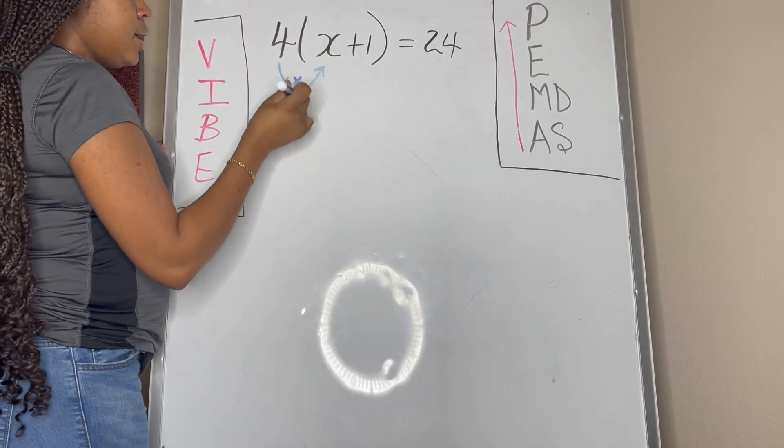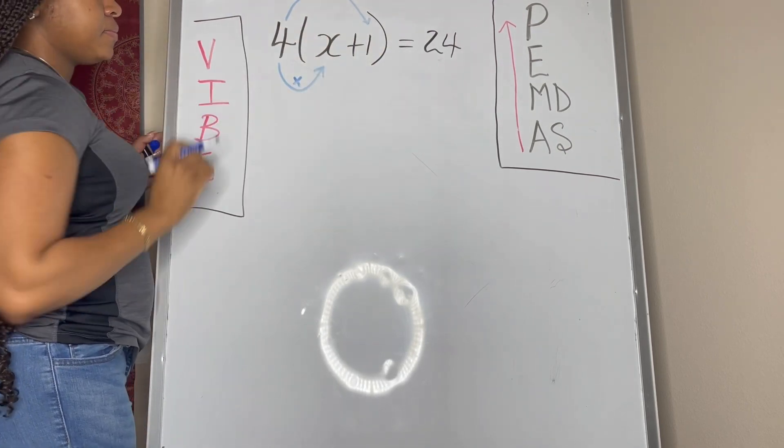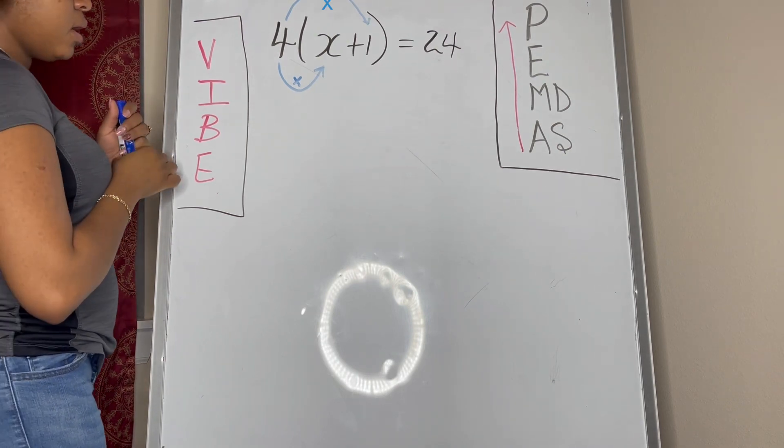So we use the four to multiply that x, and we use the four to multiply the one. So that's what we have there.